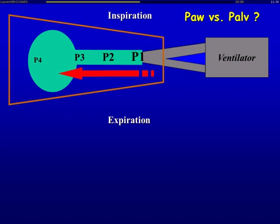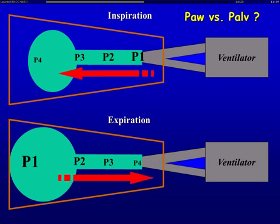Think again about resistance: during inspiration, because of resistance to flow, the pressure at the entry — the one you measure on the ventilator — is always higher than the pressure in the alveoli, and they become equal only at zero flow. During expiration, the gradient is in the opposite direction: the pressure you see on the ventilator is always lower than the alveolar pressure. At expiration they become similar only when there is no flow.